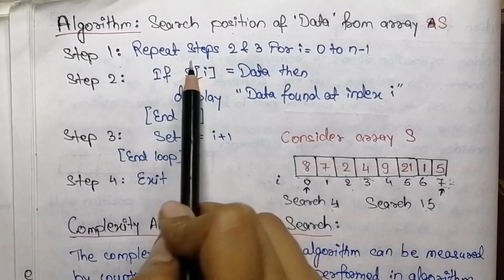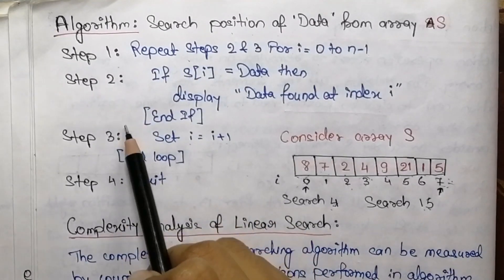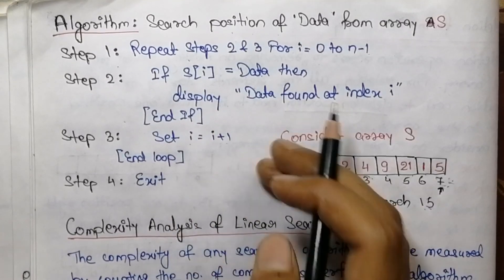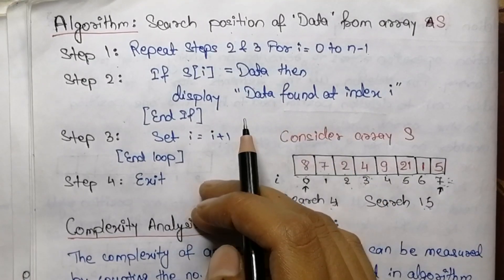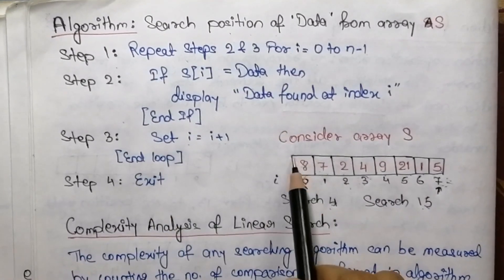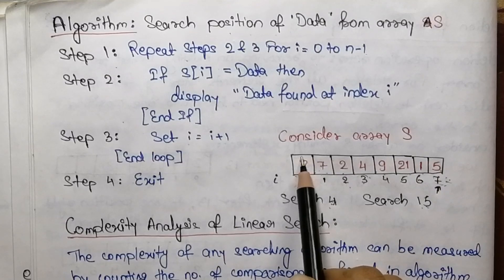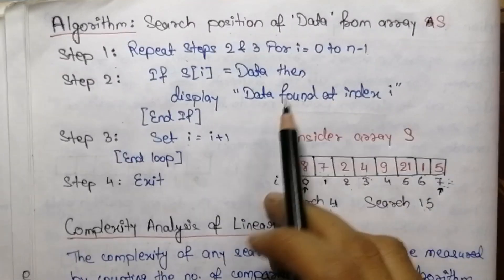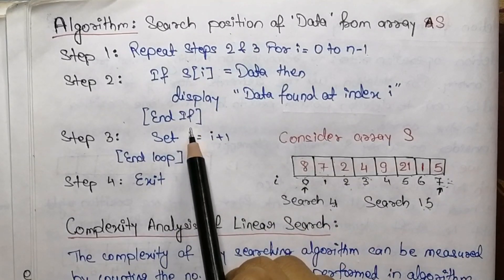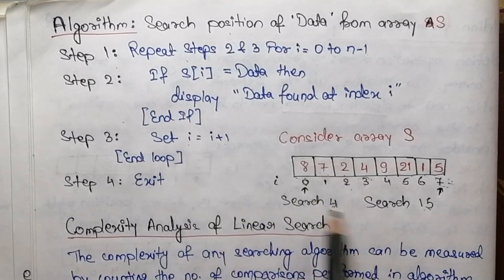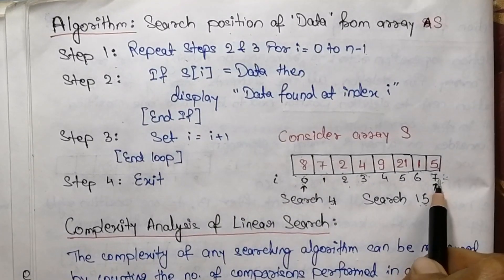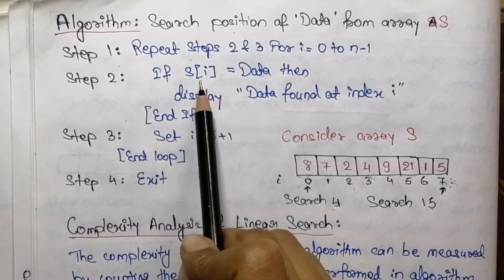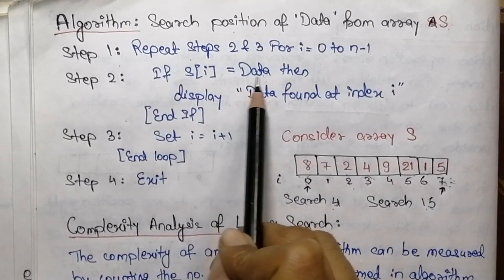Now let's begin with the algorithm for linear search. The first step is used for repeating steps two and three, and the loop is repeated for the total number of elements in the array. Let this be the array S; we need to find the data from this array. These two statements will be executed for i equals zero to seven.